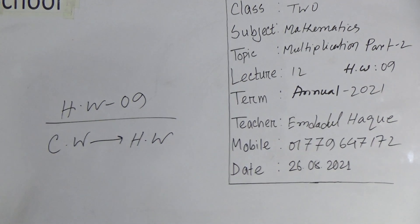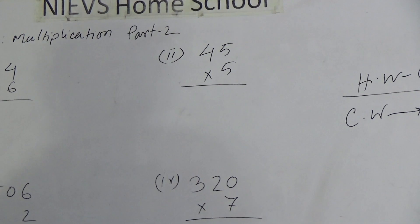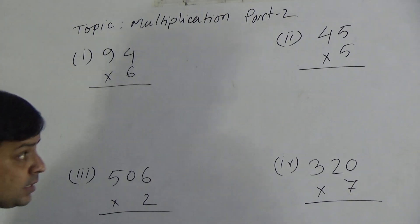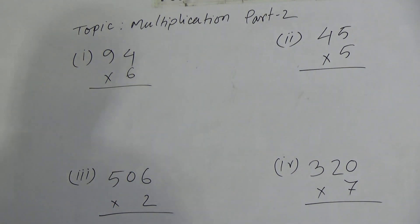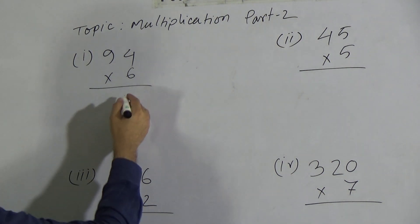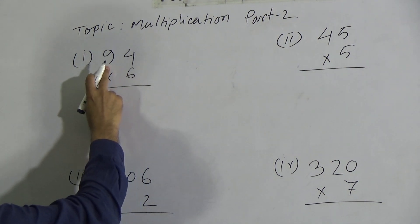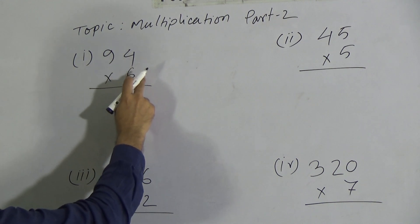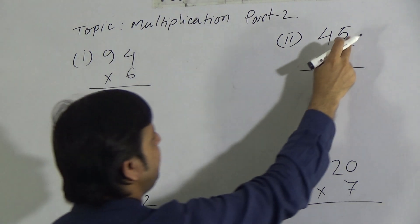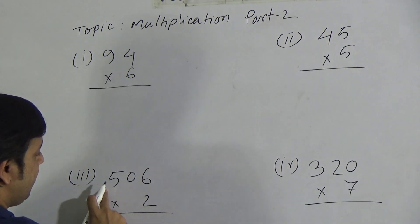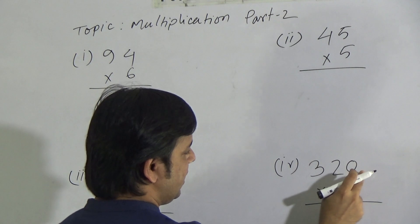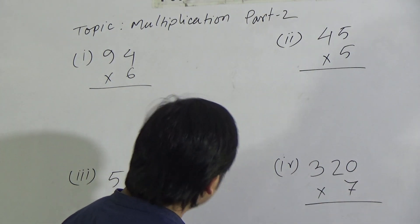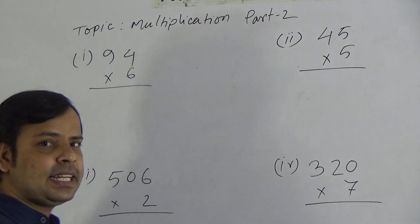In this class I will solve 4 multiplications, and these multiplications you have to do as your homework. Let us see first how we can multiply. In the first question, 94 is a number and we have to multiply that by 6. In the second question, 45 is a number and we have to multiply by 5. In the third question, 506, we have to multiply by 2. And in the last question, 320, we have to multiply by 7. In every case, we have to multiply by a single digit number.